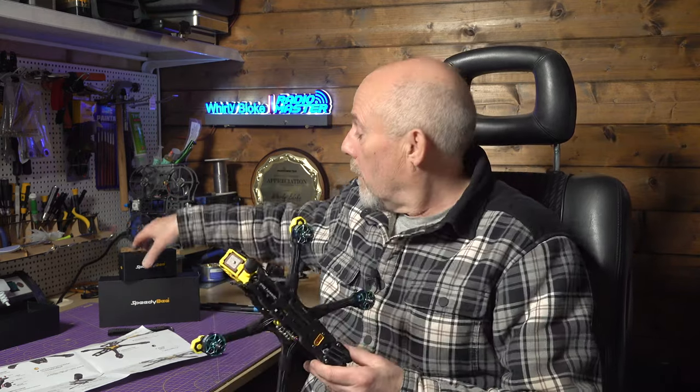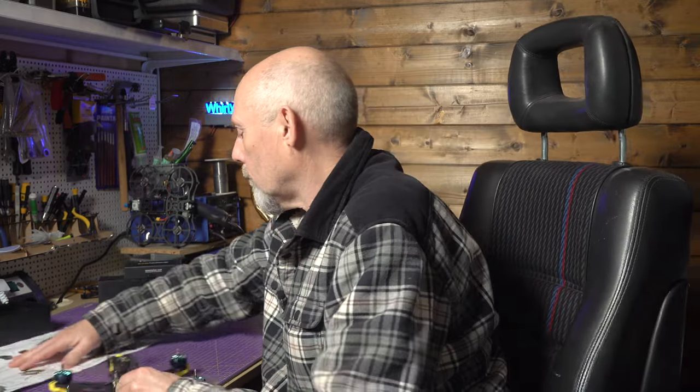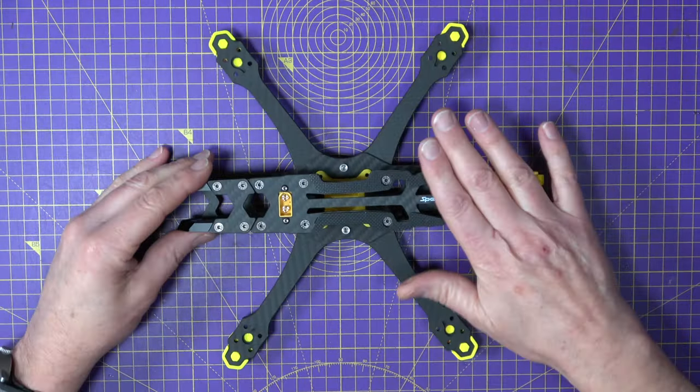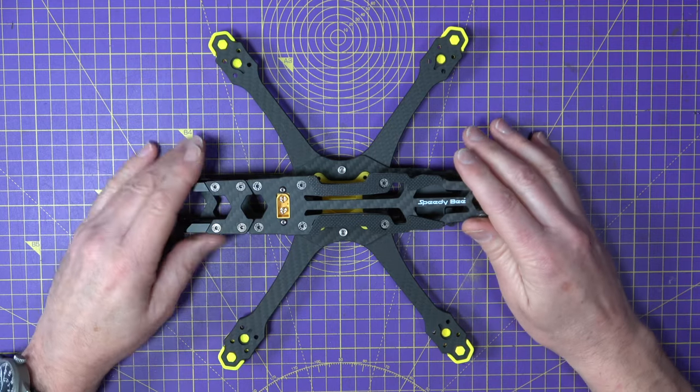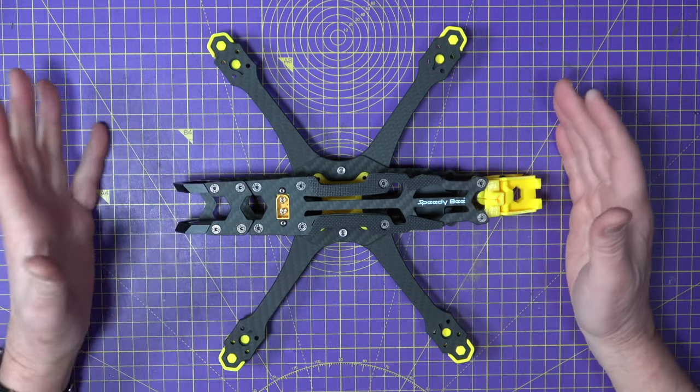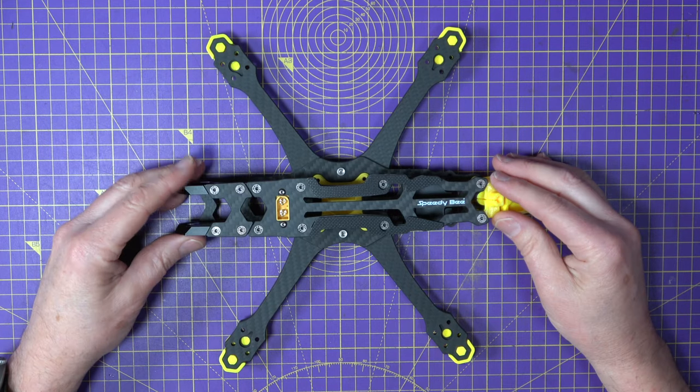Anyway this Master 5 HD frame build is a bit of a SpeedyBee extravaganza because I'm going to be using their 405v3 stack that I reviewed recently, which you can check out up here. Now as well as being a bit of a work of art, this is ridiculously good value for money and it's great quality. It's only $70 which is around £55.